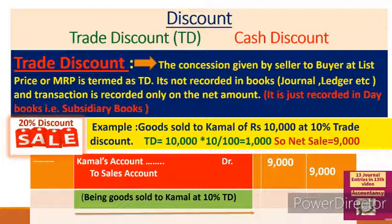The concession given by the seller to the buyer at list price or MRP is termed as trade discount. It is not recorded specifically in the journal books.